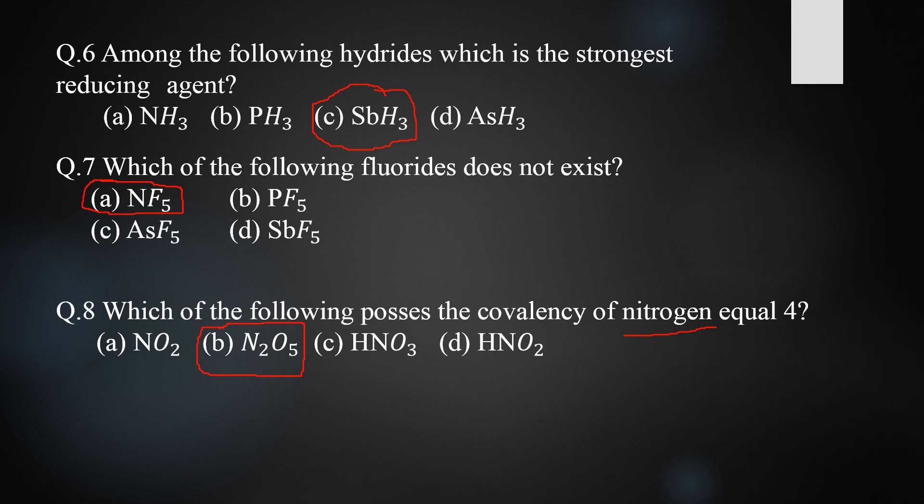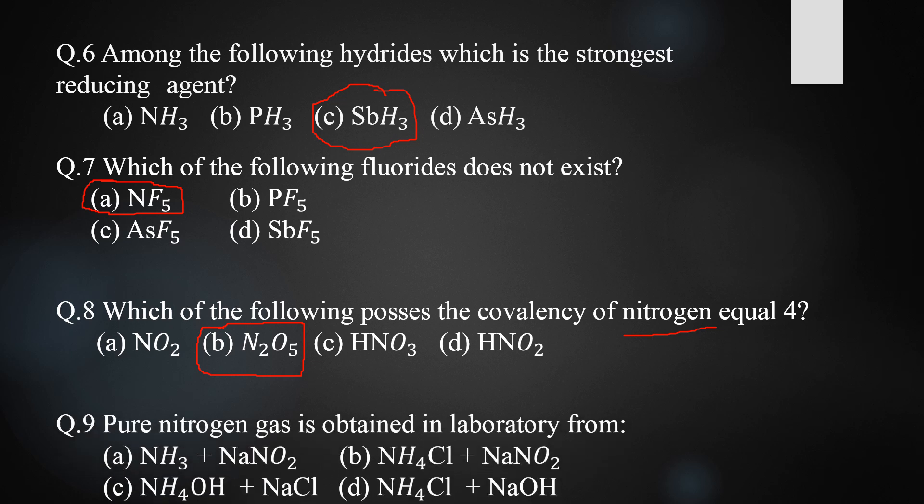Question nine: pure nitrogen gas is obtained in the laboratory from which reaction? The correct answer is option B: NH4Cl + NaNO2. When ammonium chloride and sodium nitrite combine, they form N2 and H2O. Pure nitrogen gas can be obtained in the laboratory by the combination of ammonium chloride and sodium nitrite.